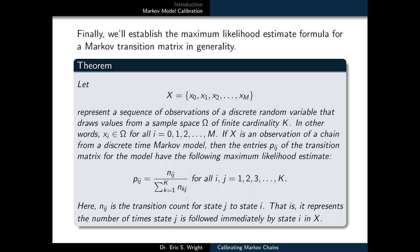So if we let x equal the time series x0, x1, x2, all the way up through xm, it represents a sequence of observations of a discrete random variable that draws values from a sample space omega of finite cardinality k. In other words, x sub i belongs to omega for each value of i ranging from 0 to 1 to 2 all the way up to m.